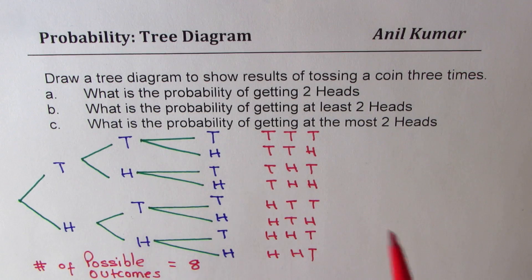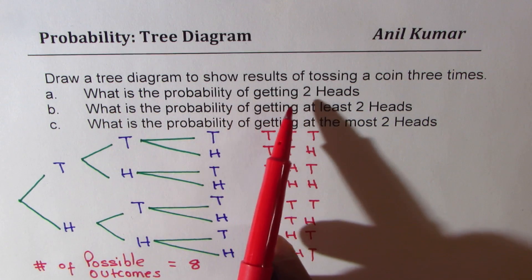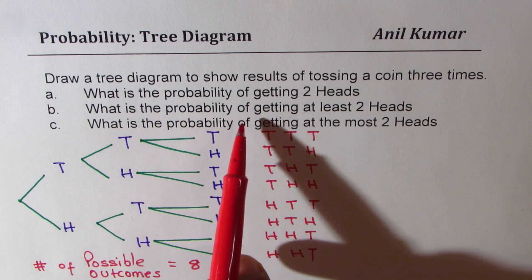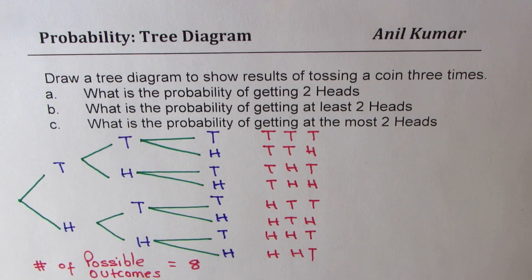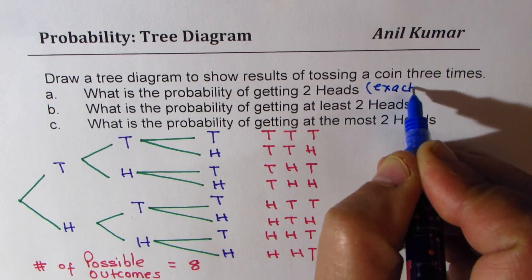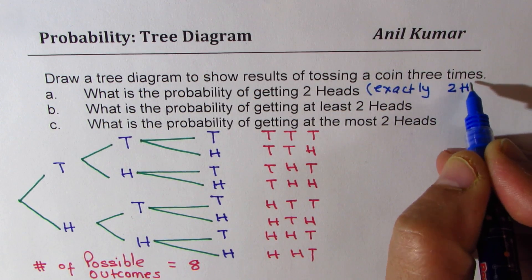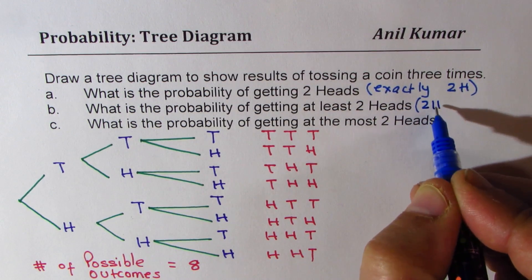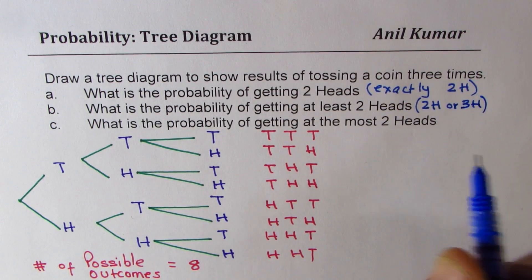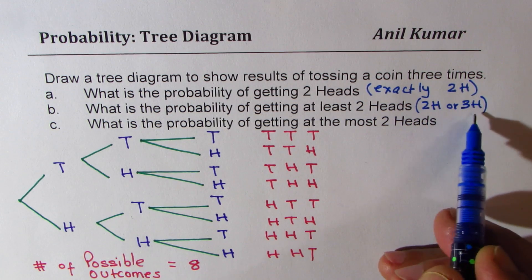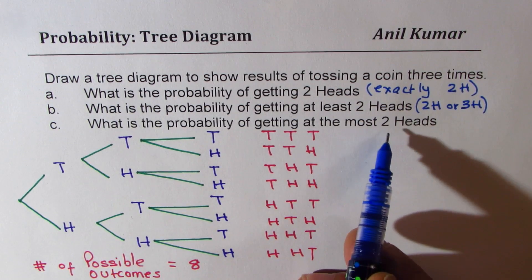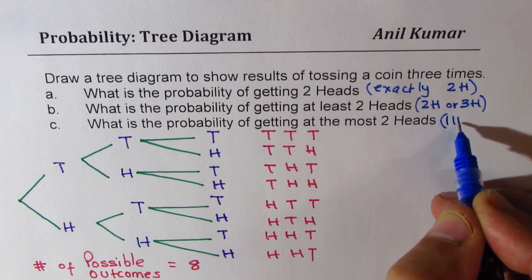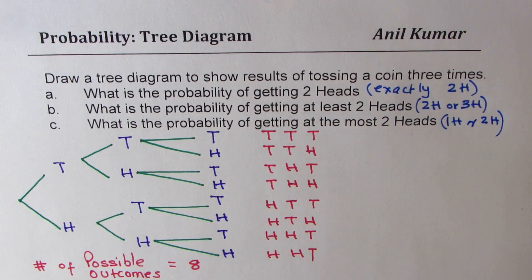Now we'll take these cases one by one. What is the probability of getting two heads — that means exactly two heads. What is the probability of getting at least two heads means two or three heads. What is the probability of getting at most two heads means we are looking for one head or two heads. So these are three different types. To answer, it's a good idea to just make a table.